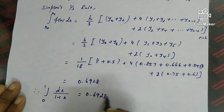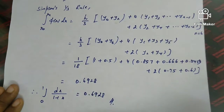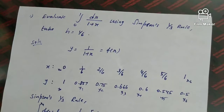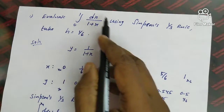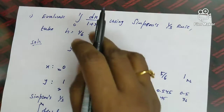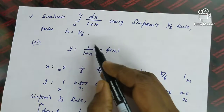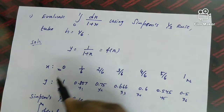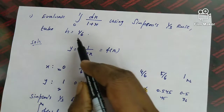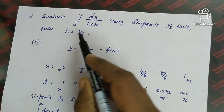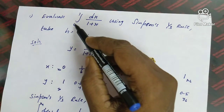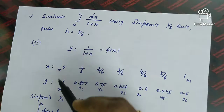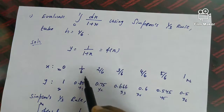To summarize how to apply Simpson's 1/3 rule: first divide the range using h, then list the x values and calculate corresponding y values, then substitute into the formula to get the final answer.